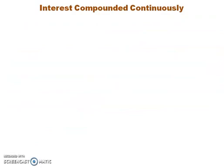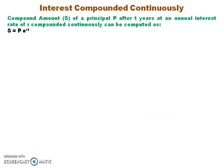Now, coming to the case when interest is compounded continuously. Continuous compounding means there are an infinite number of compoundings in a year. In this case, the compound amount S is given by the formula S equals P into e raised to power RT, where R is the rate of interest compounded continuously and T is the time period in years.